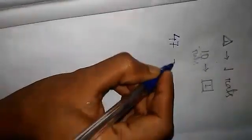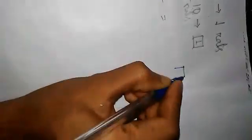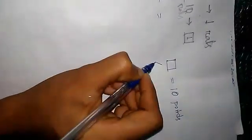Now, we will assume: this square represents 10 points, and this triangle represents 1 point.